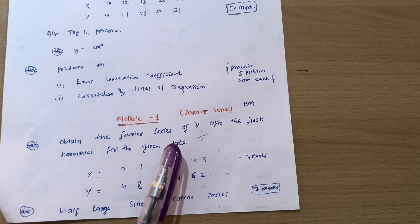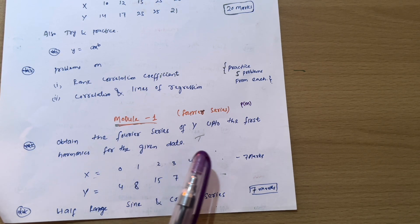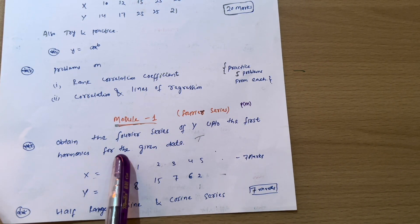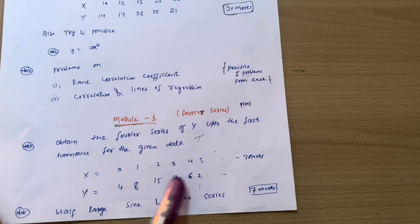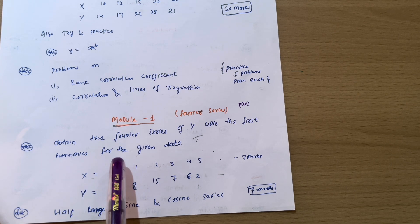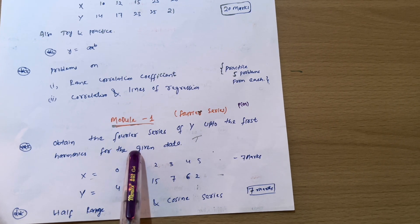So next passing module we have Fourier series, in which you have to go through one simple concept that is seven marks. Obtain the Fourier series of y up to the first harmonics for the given data. So data will be given. What you have to do is you have to obtain Fourier series of first harmonics. Also, problem solving videos are available. Make sure you will visit them. Try to understand the concept.